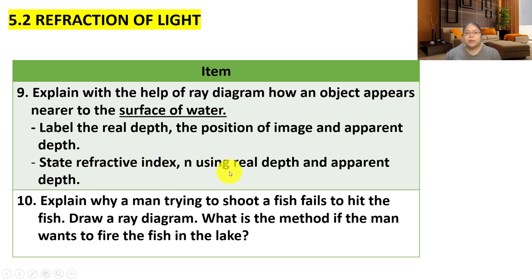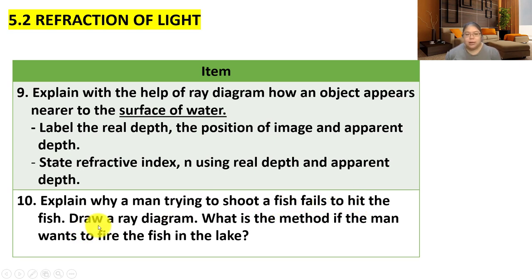Third, we need to state the refractive index n by using real depth and apparent depth. After that, we need to explain why a man trying to shoot a fish fails to hit it. We also need to draw the ray diagram and discuss what method the man should use if he wants to hit the fish.